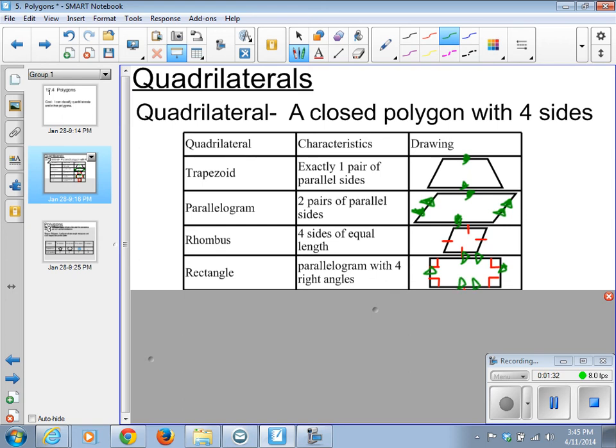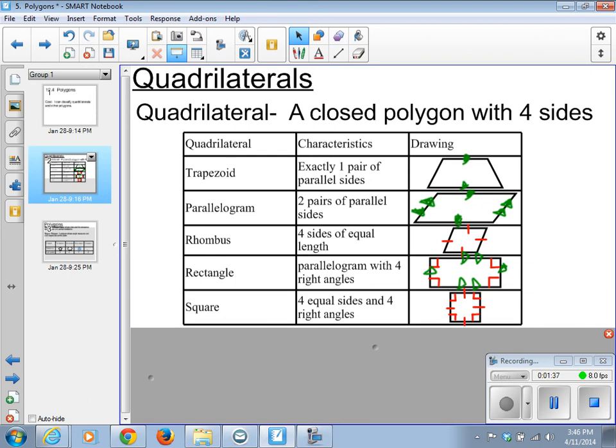And we have our four right angles, noted by our four red boxes there. And finally, a square. Four equal sides and four right triangles. Not listed, but it also has two pairs of parallel sides.